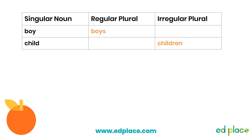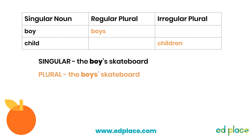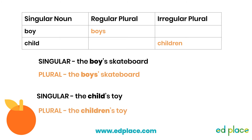Let's use the examples from the previous table to help us. For regular plurals, we add an apostrophe after the S. But for an irregular plural, we need to add an apostrophe and an S. For example, to show that one boy owns a skateboard, we add an apostrophe S for the singular; for the plural, we put the apostrophe after the S. For irregular nouns, like 'child', we add apostrophe S for singular, and for the plural 'children' we add an apostrophe and an S after that.